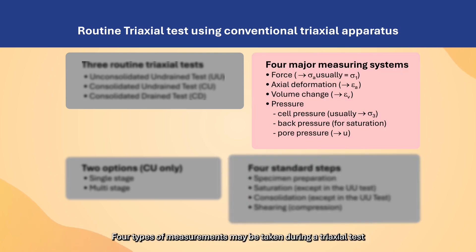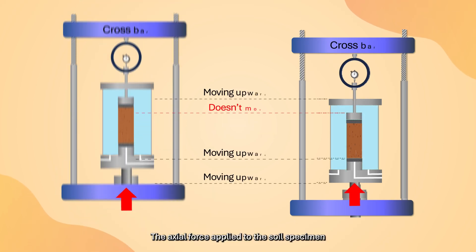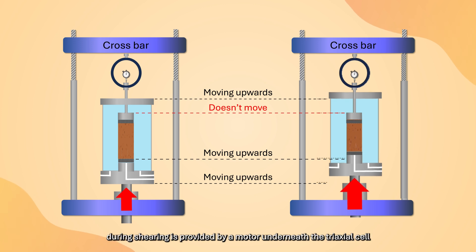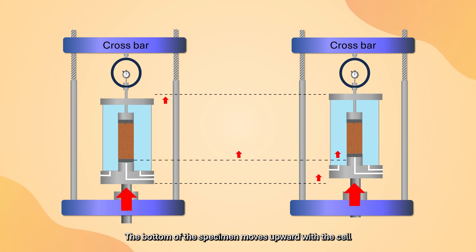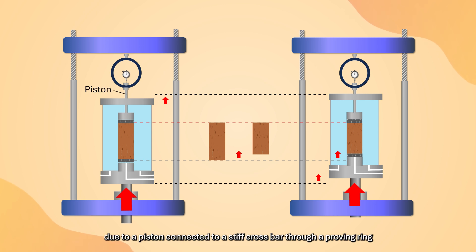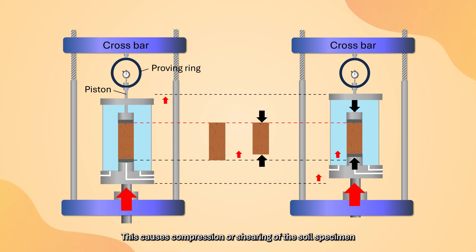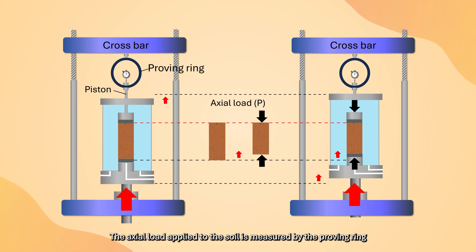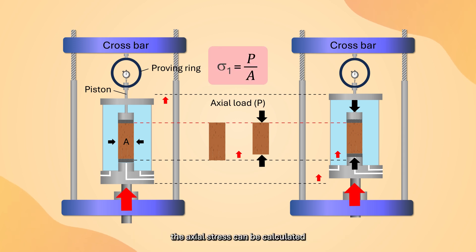Four types of measurements may be taken during a triaxial test. The first is axial stress measurement. The axial force applied to the soil specimen during shearing is provided by a motor underneath the triaxial cell which pushes the cell upwards. The bottom of the specimen moves upwards with the cell; however, the top of the specimen remains almost stationary due to a piston connected to a stiff crossbar through a proving ring. This causes compression or shearing of the soil specimen. The axial load is measured by the proving ring, and as the cross-sectional area of the specimen is known, the axial stress — which is the major principal stress in the test — can be calculated.